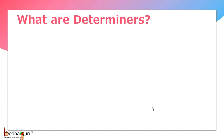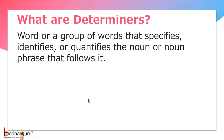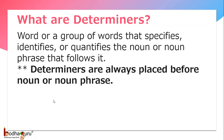To summarize what we learned: what are determiners? It is a word or a group of words that specifies, identifies, or quantifies the noun or noun phrase that follows it. So remember the position — determiners are always placed before a noun or noun phrase.